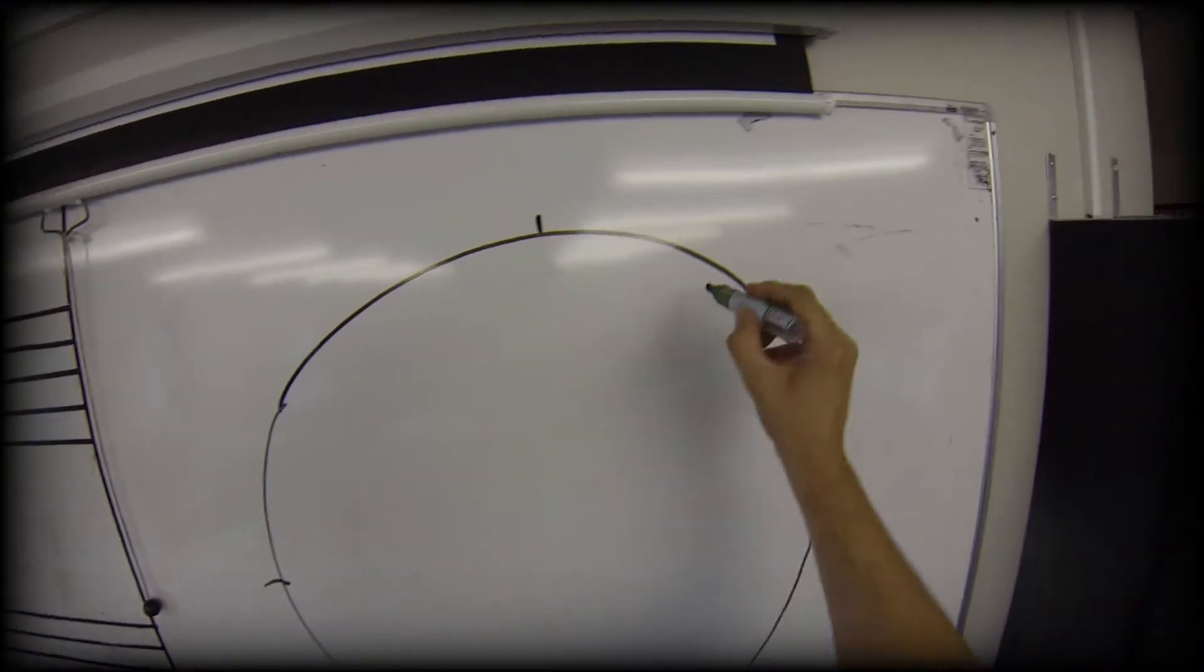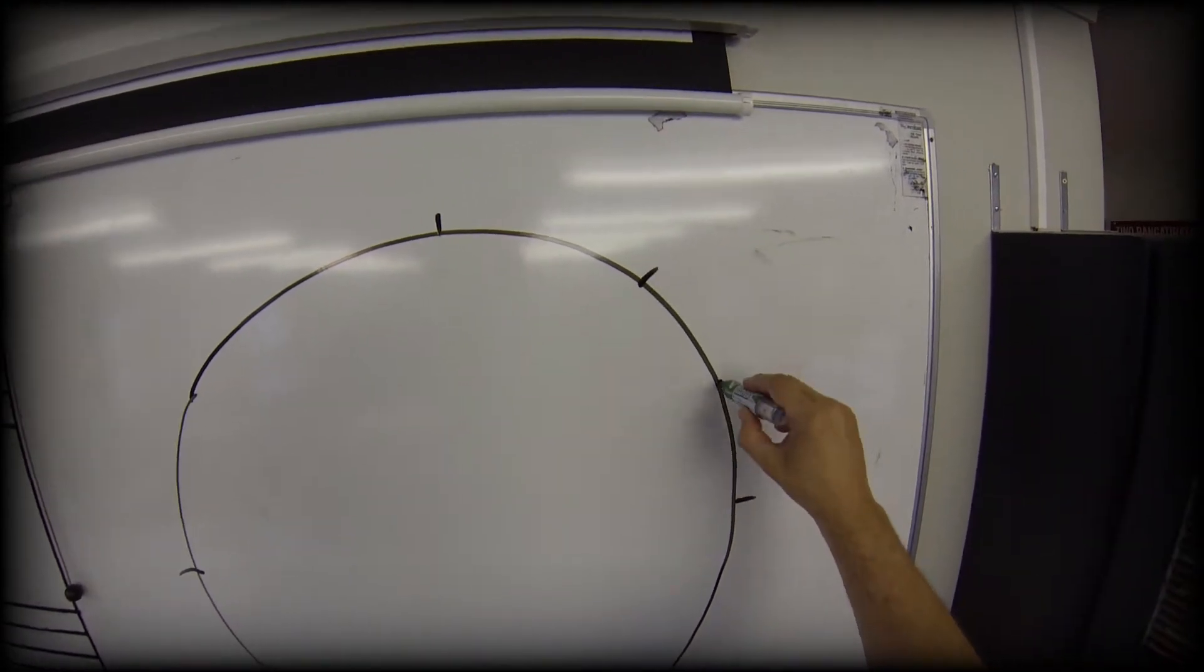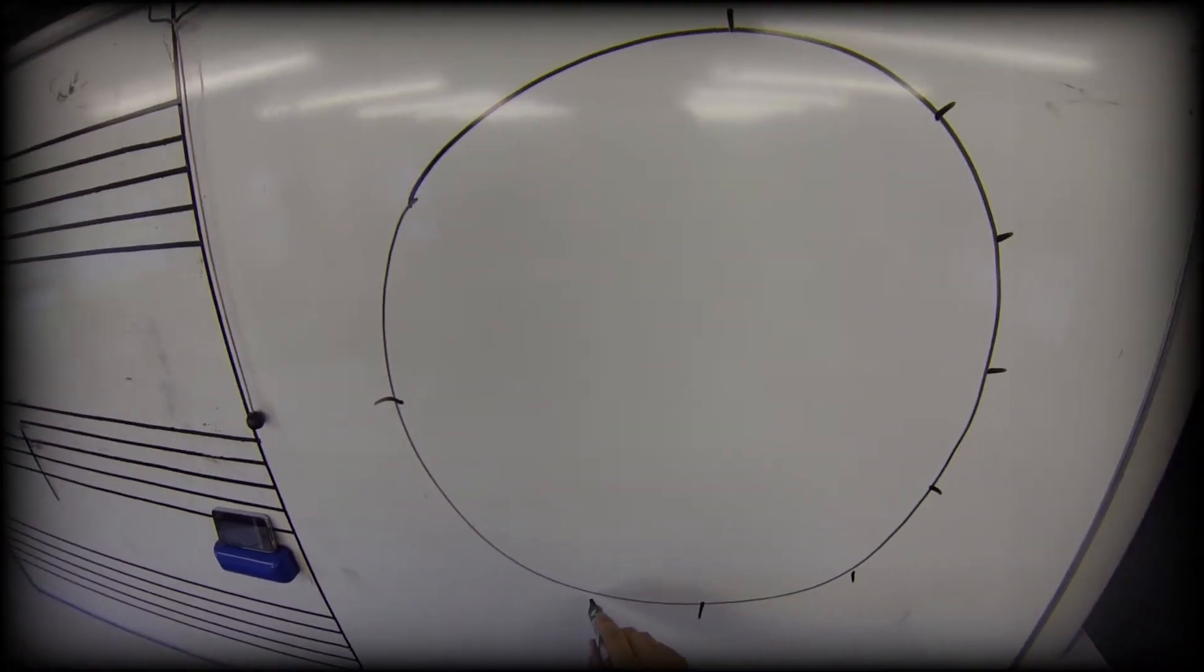So I'm just going to divide up my clock face into hours. So quarters, and then each quarter has two more hours in it.